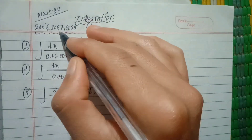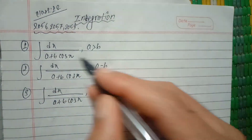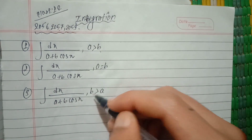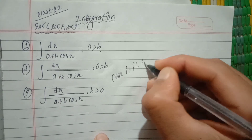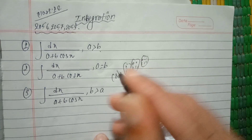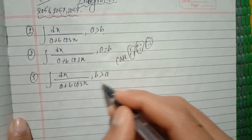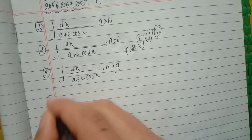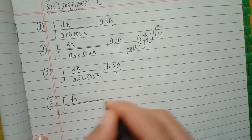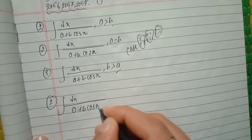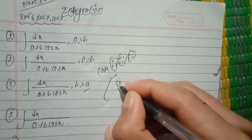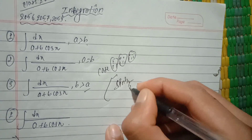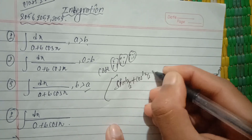In class, we will solve the integration problem. One of the most important questions: integration of dx divided by (a + b·cos x). We use the formula: sine square x by 2 plus cos square x by 2 equals to 1.